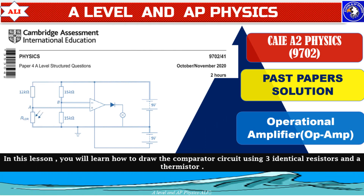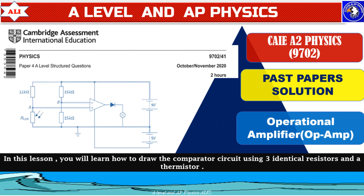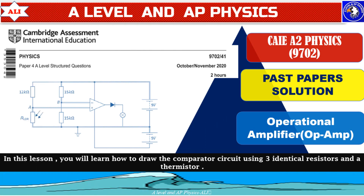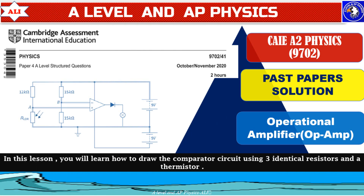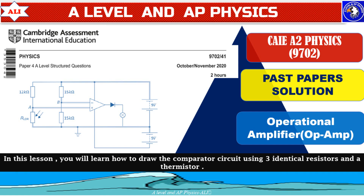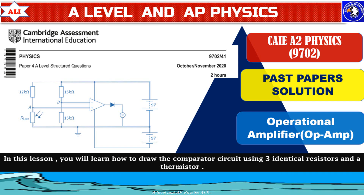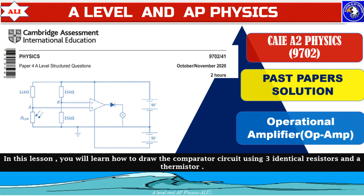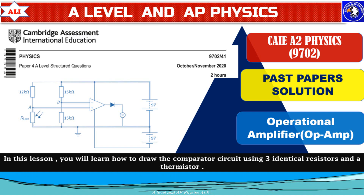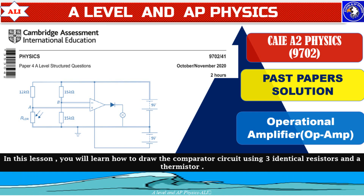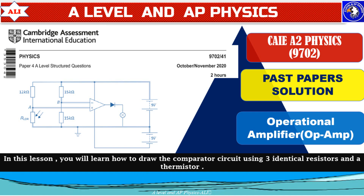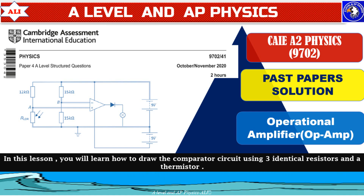Welcome to A-Level and AP Physics, a place where you can improve your understanding of physics with confidence. In today's class we will talk about operational amplifiers. I'll explain how to draw a comparator circuit using three identical resistors and a thermistor.